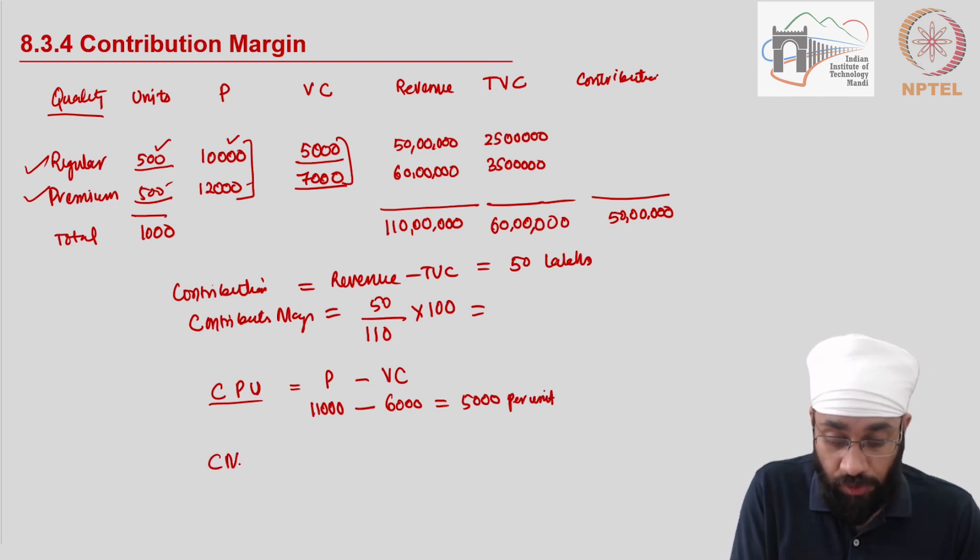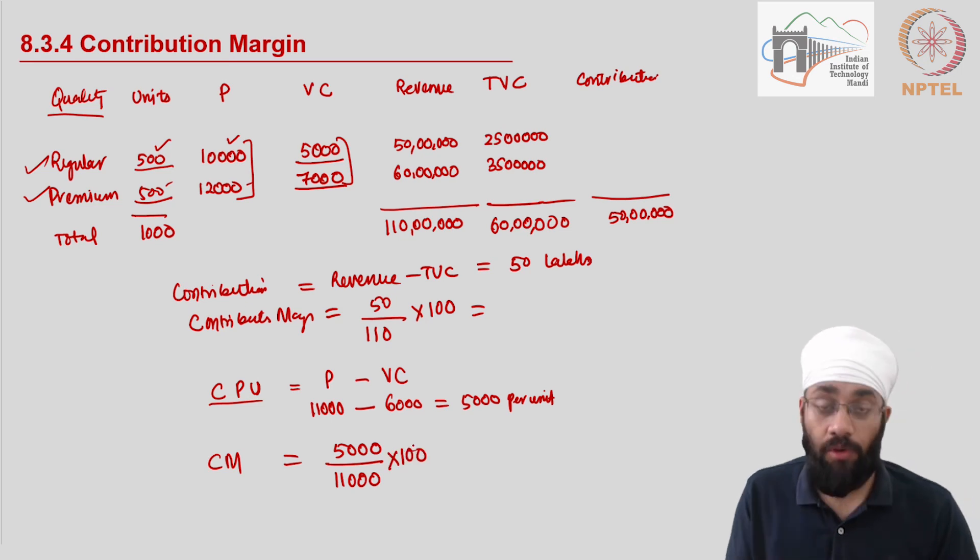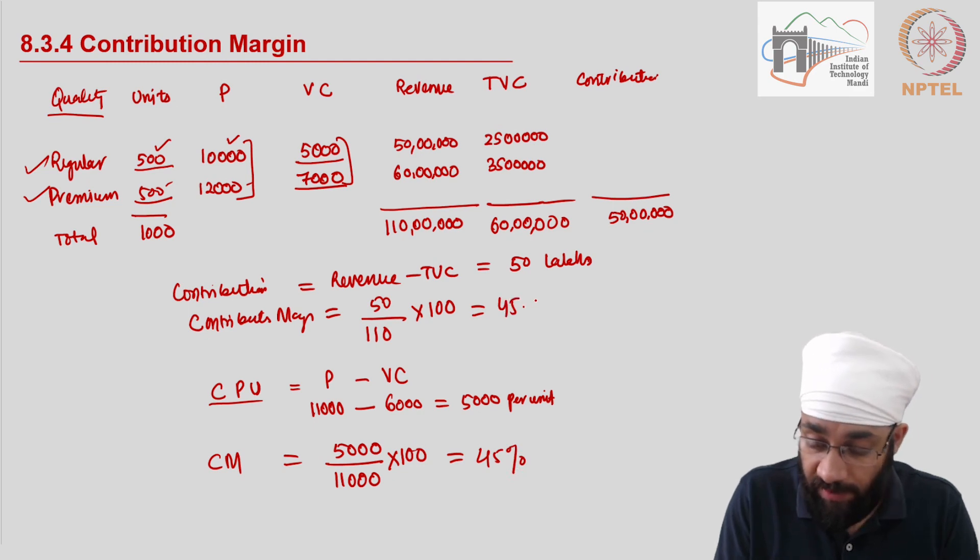And now if you have to figure out contribution margin, all you have to do is take 5,000, divide this by the 11,000, which is the price per unit, multiply this by 100, and you have the contribution margin. In both the cases, this comes out to be 45%, so 45.4% actually.